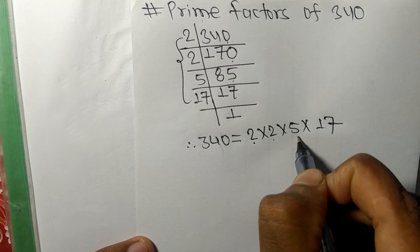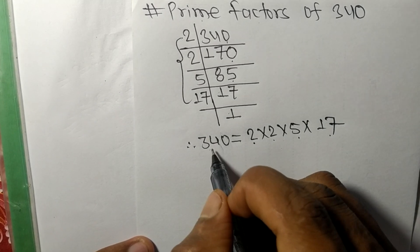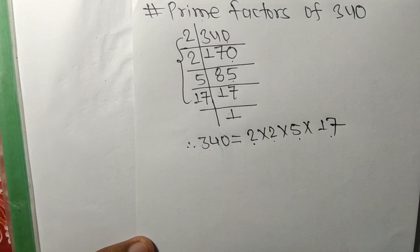So 2, 2, 5, and 17 are the prime factors of 340. This much for today, and thanks for watching.